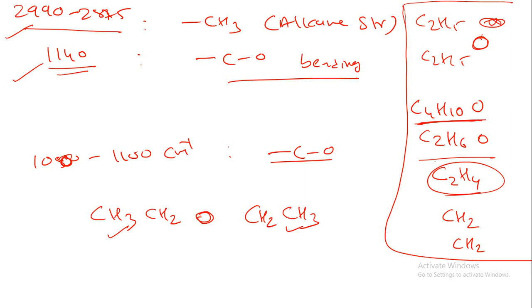It is very difficult, and I keep repeating this — it is very difficult for any organic chemist to predict a structure based on IR alone. In MSc you will have 1H NMR, 13C NMR, and mass spectroscopy. By the combination of these four spectroscopic techniques you can easily predict, but in your syllabus you only have IR spectroscopy.